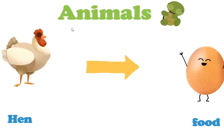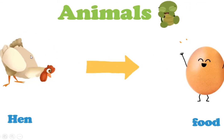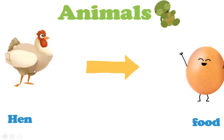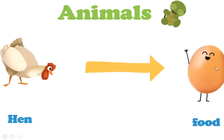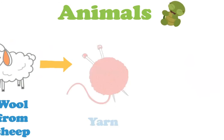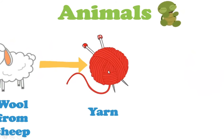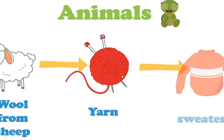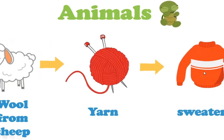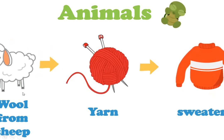What about animals? The hen gives us food like meat and eggs. We also get wool from sheep. The wool covers the sheep and we turn it into yarn. From yarn we make things to wear, like sweaters and jackets — anything for the winter. So from sheep we get wool, then yarn, then the sweater we wear.